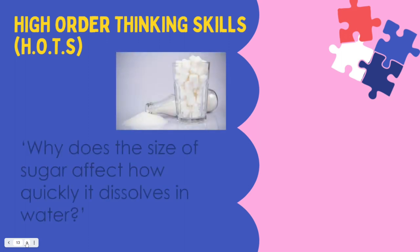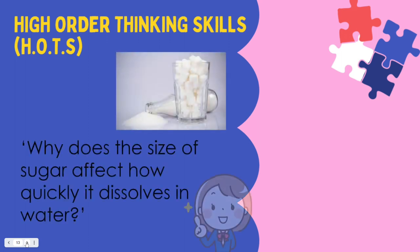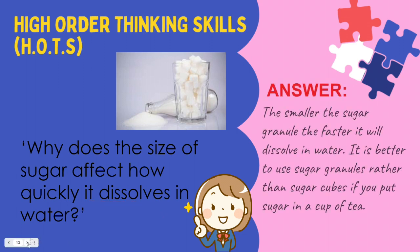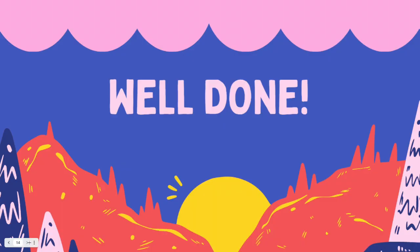Something to think about: why does the size of sugar affect how quickly it dissolves in water? Because the smaller the sugar granule, the faster it will dissolve in water. It is better to use sugar granules rather than sugar cubes if you put sugar in a cup of tea. Thank you for listening, future scientists!